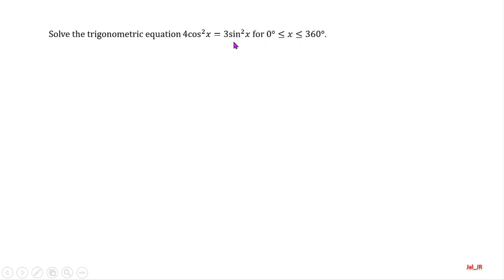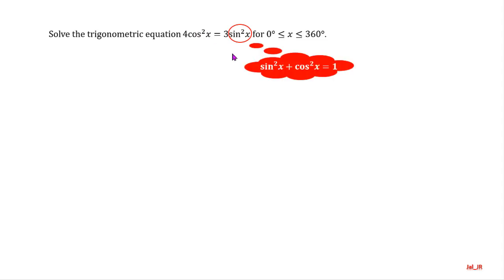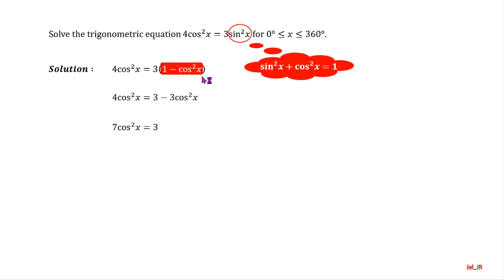There are two trigonometric functions in this equation. We can change cosine to become sine, or vice versa. Remember the trigonometric identity: sine squared of x plus cosine squared of x equals 1. Substitute sine squared of x with 1 minus cosine squared of x. Expand and then simplify the equation. We have cosine squared of x equal to 3 over 7.